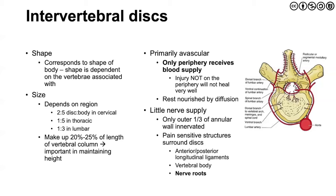There also is little nerve supply — only the outer third of the annular wall is innervated. There are pain-sensitive structures that surround the discs, though, not only the ligaments but most notably the nerve root. Oftentimes when there is disc pathology — whether that's protrusion, prolapse, herniation, or sequestration — it's the nerve root that is being impinged upon and irritated rather than the actual disc itself conveying that sense of danger or harm.